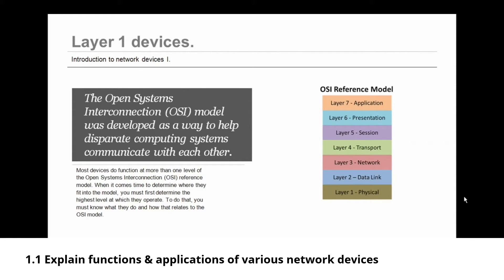We're going to be discussing the bottom three layers — layers one, two, and three — today. Most devices do function at more than one layer of the OSI reference model, but when determining where they fit into the model, you must first determine the highest level at which they operate, because that's where they fit. To do that, you must know what they do and how that relates to the OSI model.